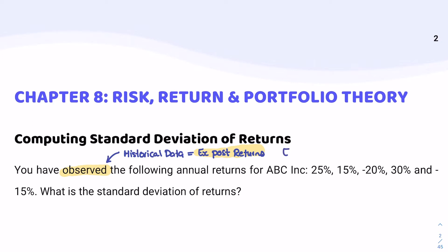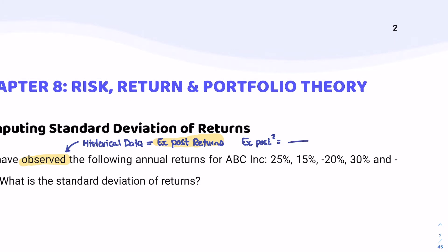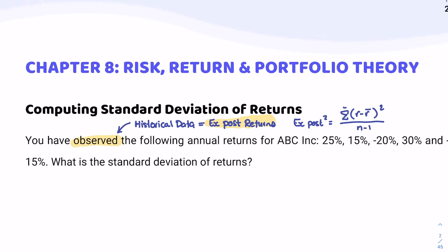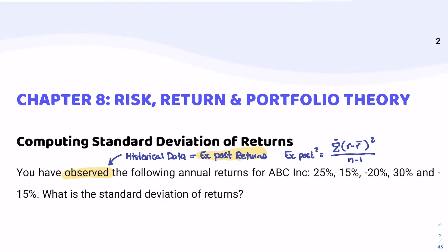So ex-post is equal to the following, and I'll write it on the screen. We have the sum of (r minus the mean) squared, divided by n minus 1, all under a square root. That's your formula for finding the standard deviation of your ex-post data set. Now that it's obvious we're dealing with historical data and ex-post returns, what we need to do now is just two steps.